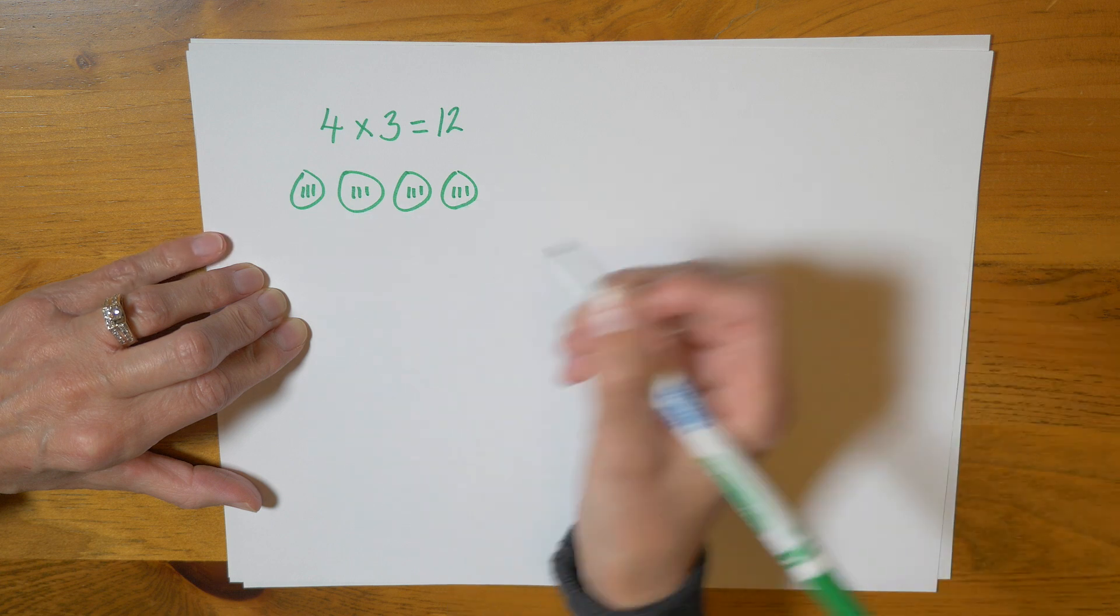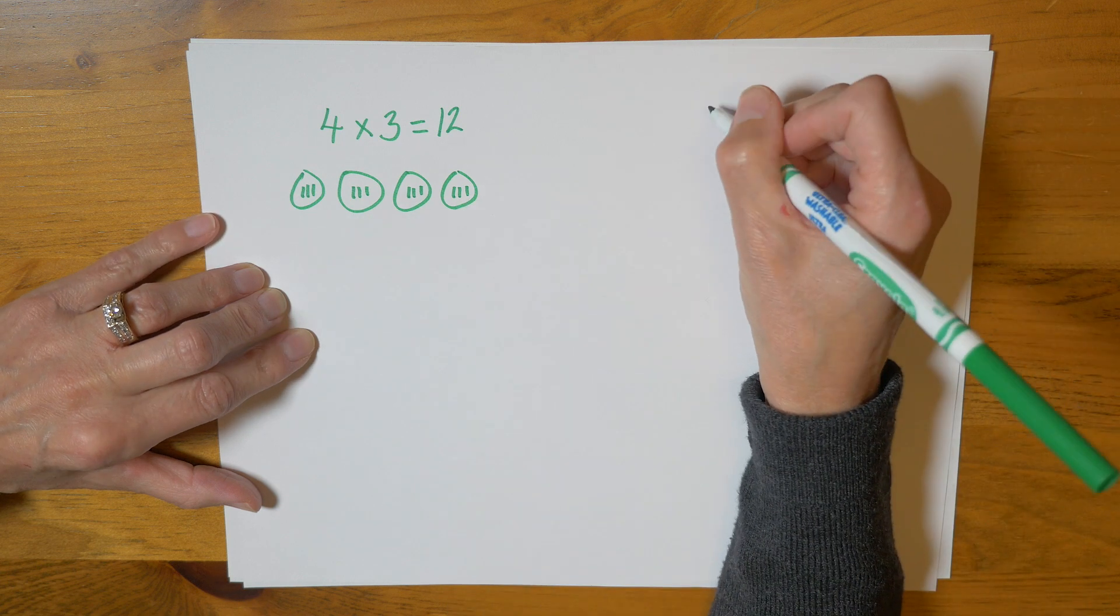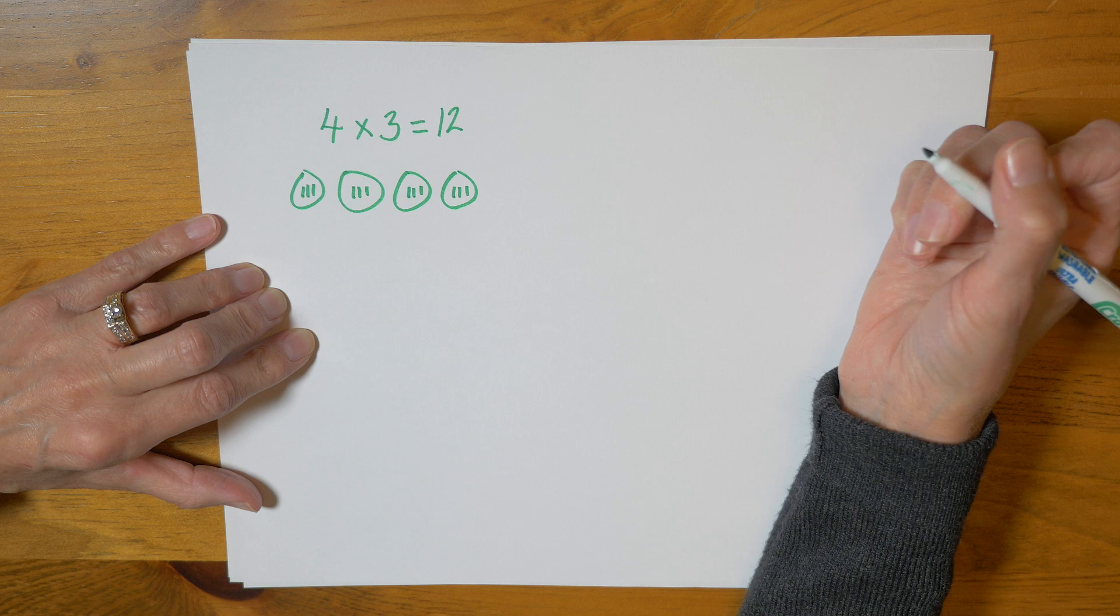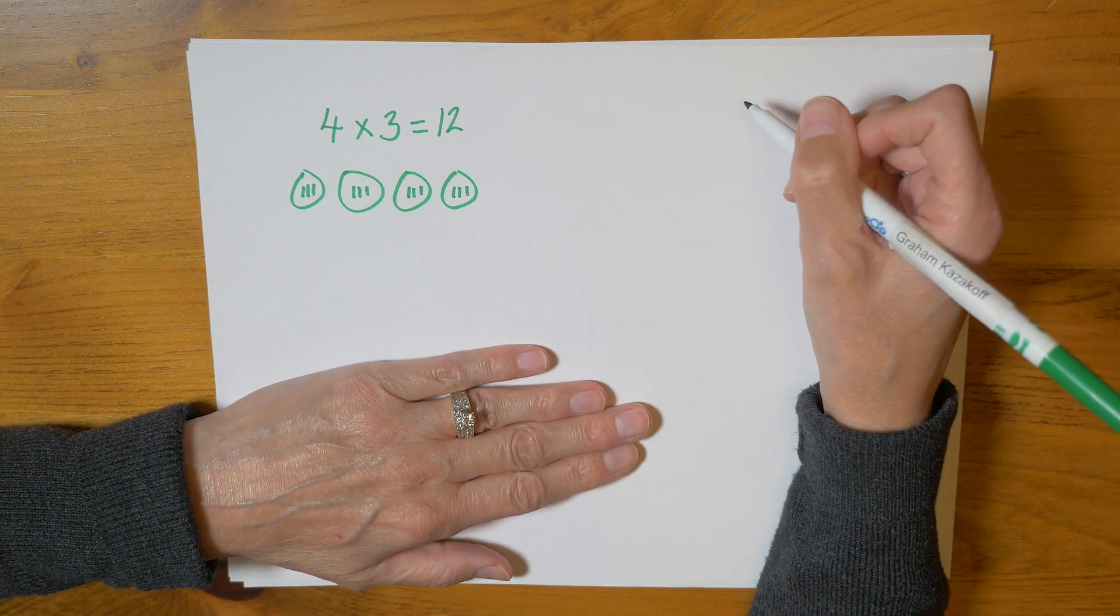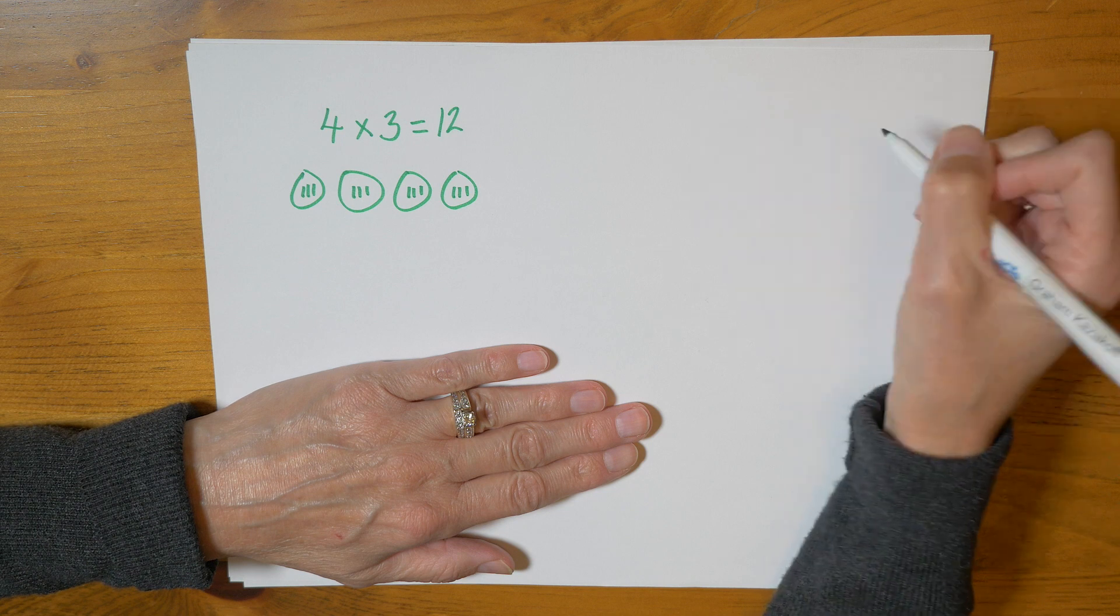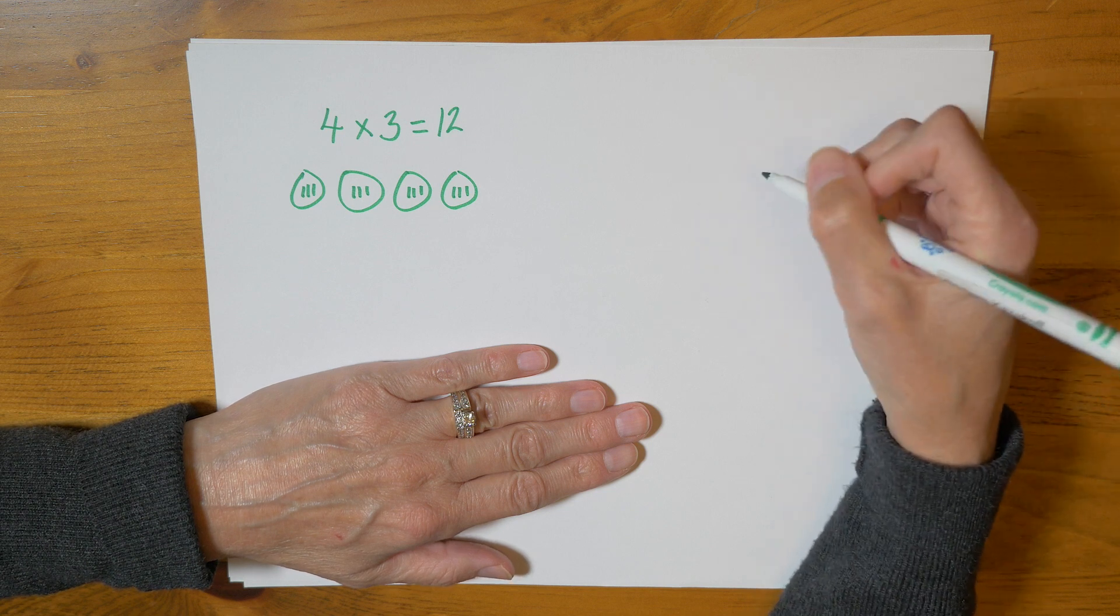Three, six, nine, twelve. And if I'm doing an array it's the same as groups of except the rows and columns are just nicely lined up.